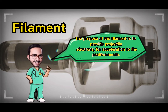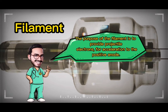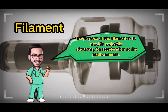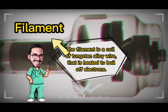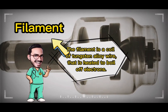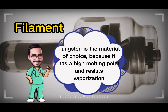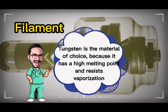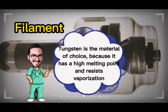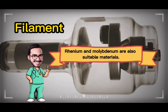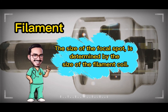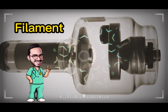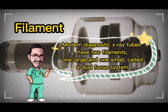The purpose of the filament is to provide projectile electrons for acceleration to the positive anode. The filament is a coil of tungsten alloy wire that is heated to boil off electrons. Tungsten is the material of choice because it has a high melting point and resists vaporization. Rhenium and molybdenum are also suitable materials. The size of the focal spot is determined by the size of the filament coil. Modern diagnostic x-ray tubes have two filaments — one large and one small — called a dual focus system.